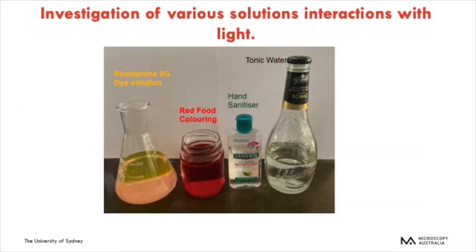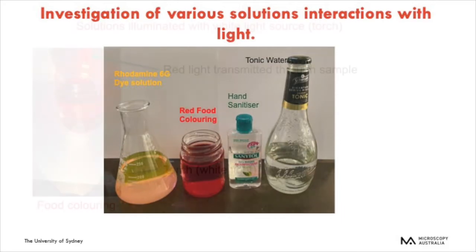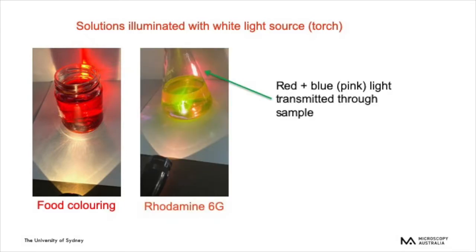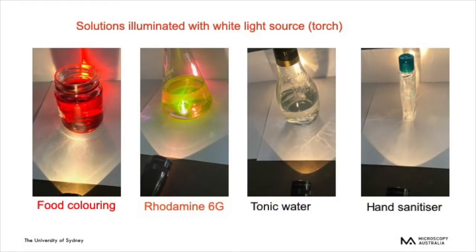As discussed before, contrast techniques involve absorption of light and fluorescence is emission. Here we have four solutions: a Rhodamine 6G dye solution, a solution of red food colouring, some hand sanitiser, and tonic water. When we shine white light from a torch on the red food colouring, red light is transmitted through the sample. With the Rhodamine solution, we see a pink light in the background — red and blue light being transmitted while all other light is absorbed. When shining white light on the tonic water and hand sanitiser, we see light transmitted through with only a little reflection from the glass, and no colour being absorbed.